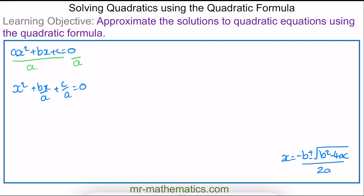Now we can write it in completed square form by halving the coefficient of x. So we have (x + b/2a)², and we complete this square by taking away (b/2a)², added to c/a, to make 0.